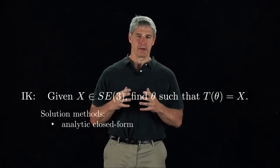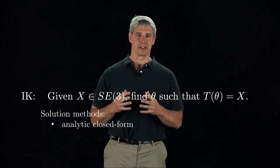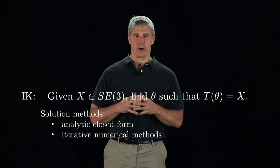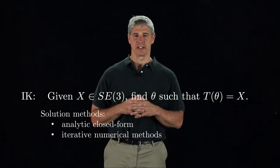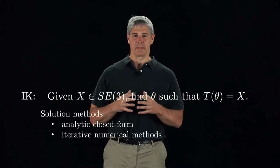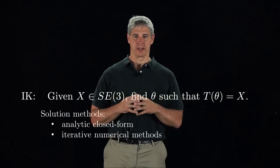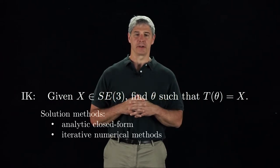For arbitrary robot kinematics, however, analytic solutions may not exist, so a second approach is to use an iterative numerical method. This approach requires an initial guess at a solution, then iteratively drives the initial guess toward a solution. Unlike analytic methods, this approach requires an initial guess and will only find one solution, not all possible solutions, but it applies to robots with arbitrary kinematics.